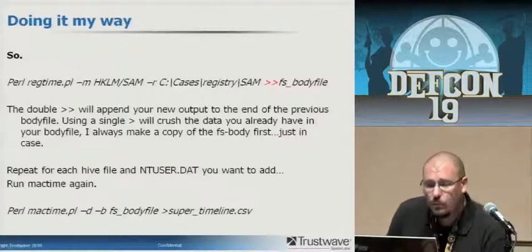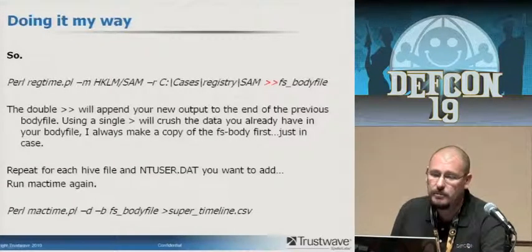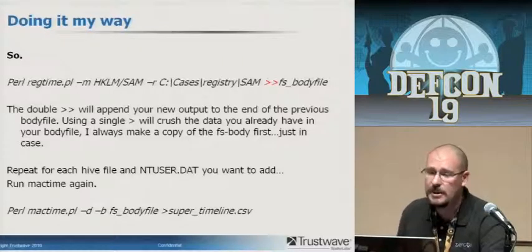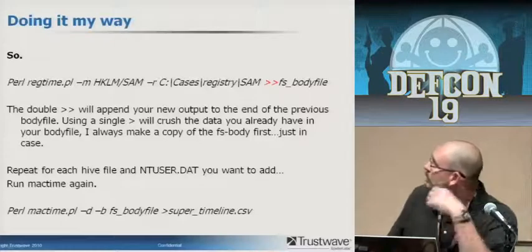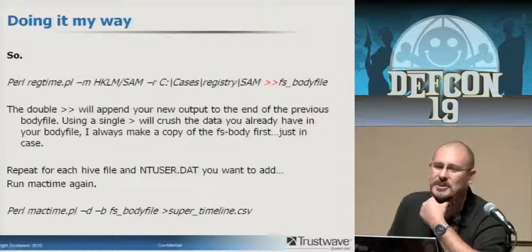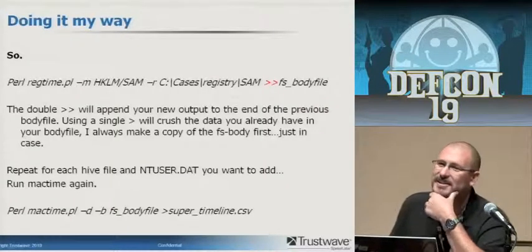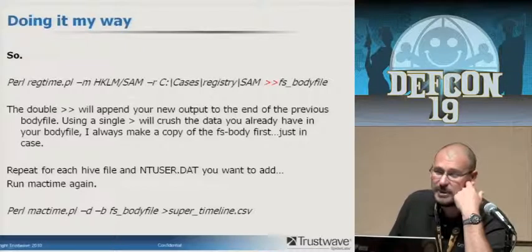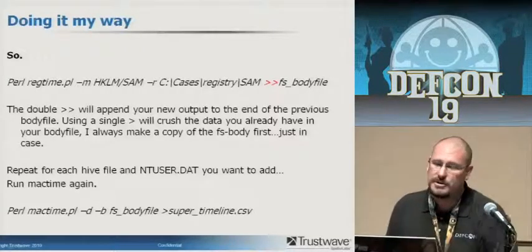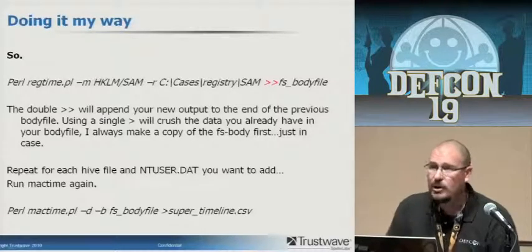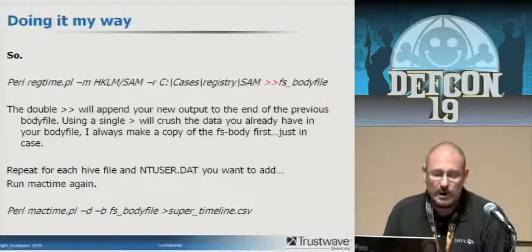Here's adding it to the body file: perl regtime.pl -M, same command, recursively, point it at the actual hive file — C:\cases\registry\SAM in this case — then append it to the body file. Notice there are two greater-than symbols. Use one and you truncate your whole file, so it's critical to append and not overwrite all the work you just did. Always make a copy of the body file before messing around — that's just good practice. Repeat for each hive file, then run MacTime again — mactime.pl pointed at your body file, spit it out to a super timeline.